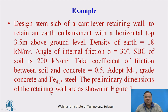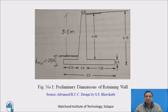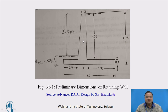The preliminary dimensions of the retaining wall are as shown in figure 1. Learners are requested to see another video on stability analysis of the cantilever retaining wall, because after stability analysis only we can do the design of the stem. It is necessary to see that video before going for this design of stem slab, where we assume the sizes of the stem and the base slab.